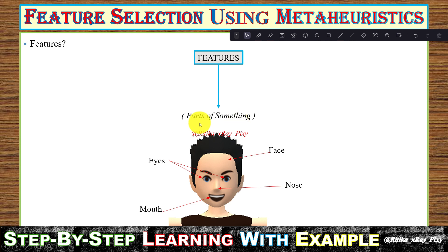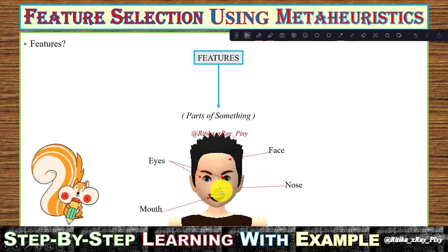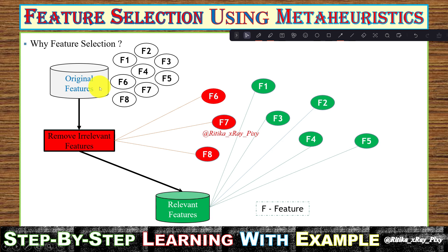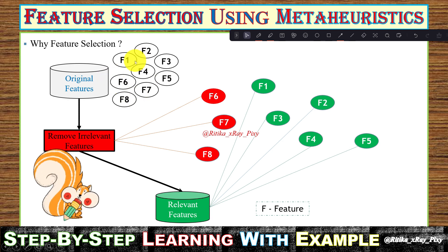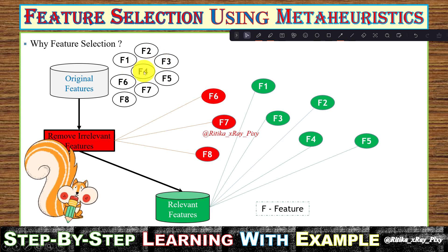Features mean parts of something. For example, you can see different facial features for a face recognition or face detection problem — features like the face, eyes, nose, and mouth. Now, the next question is why we need feature selection. Suppose we have a feature dataset containing eight features, both relevant and irrelevant, and we need to select only the relevant ones.